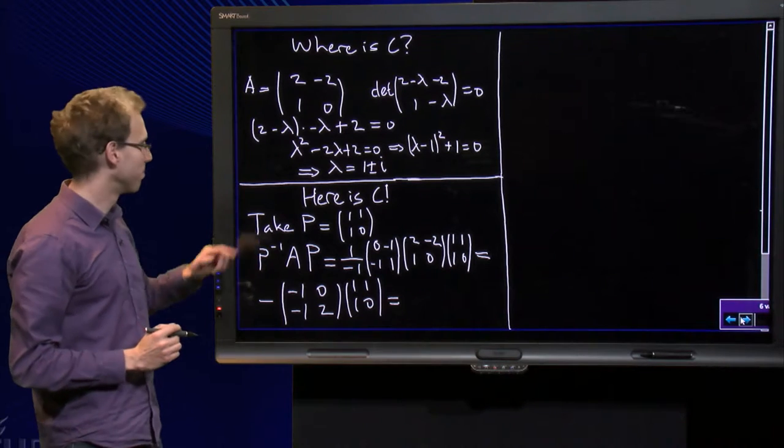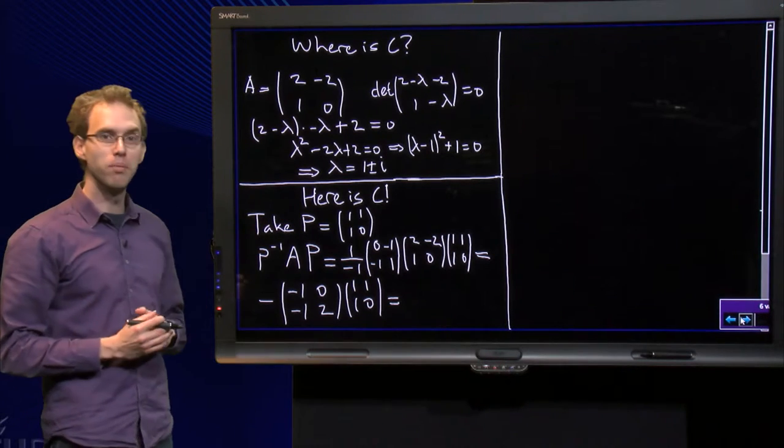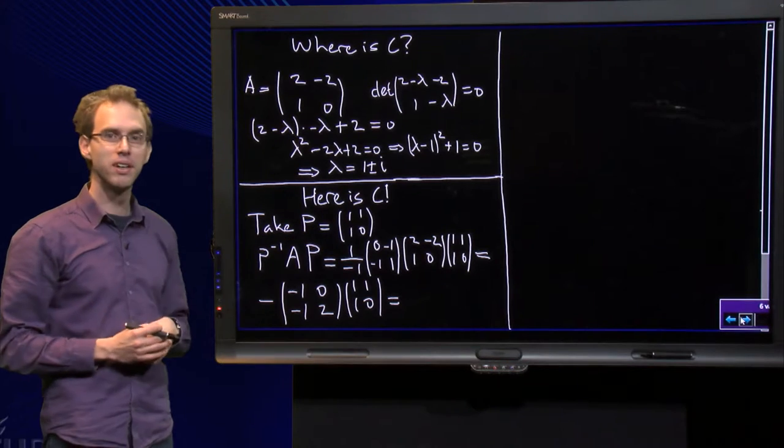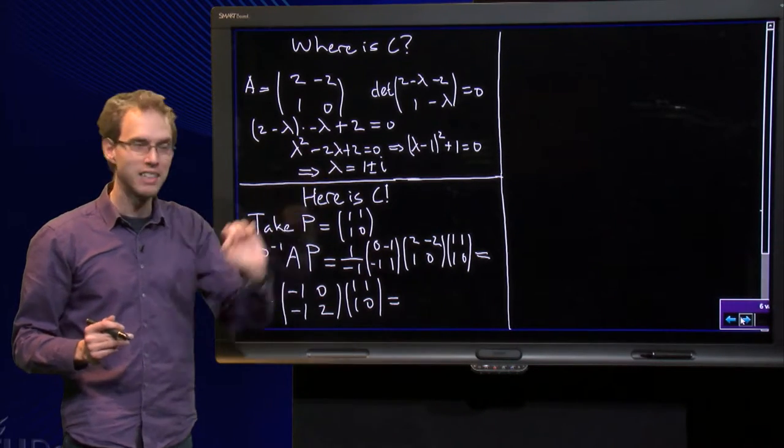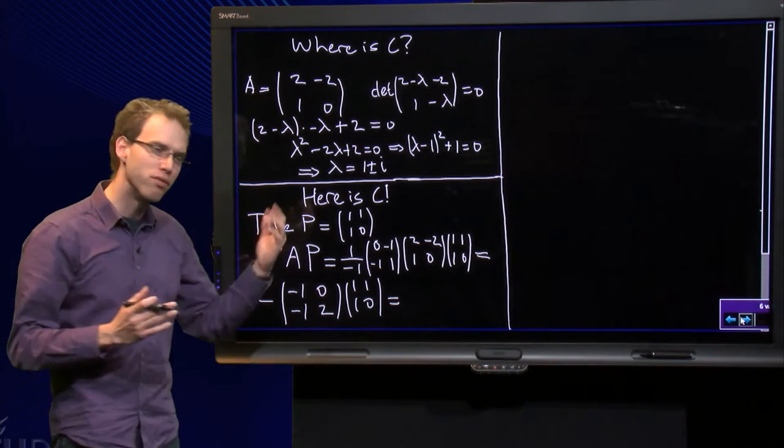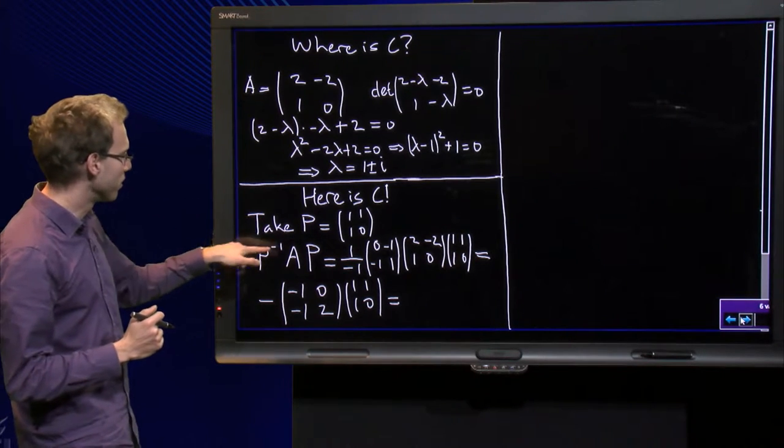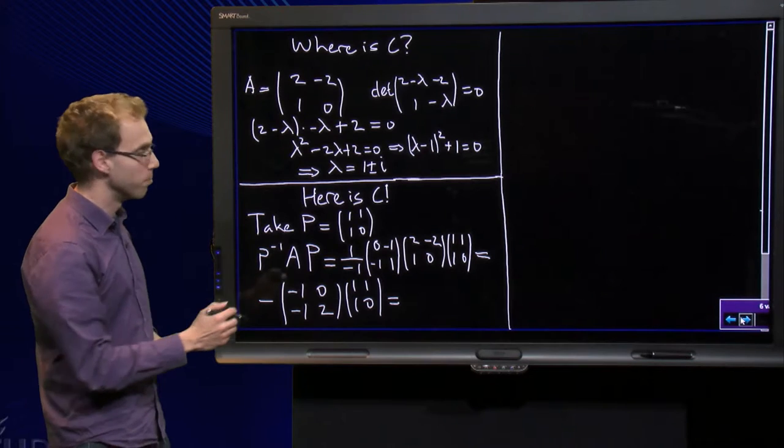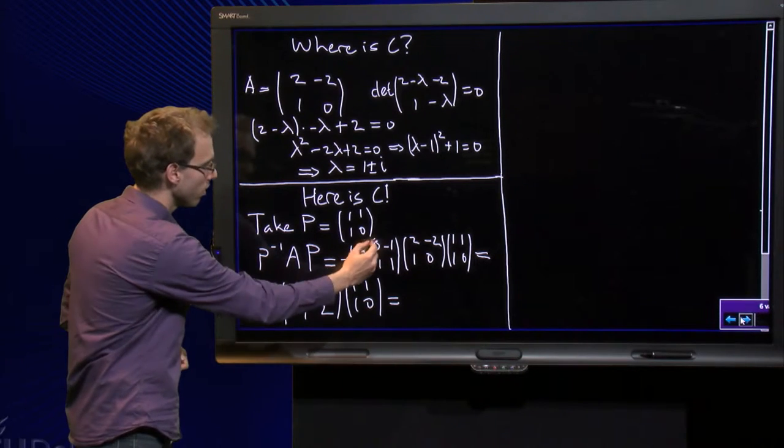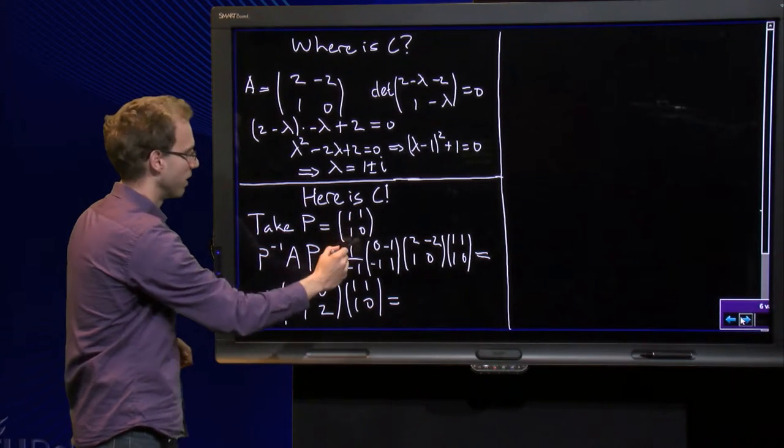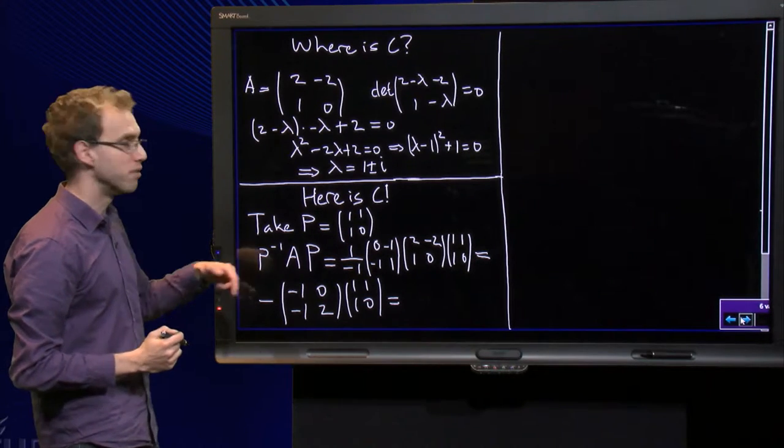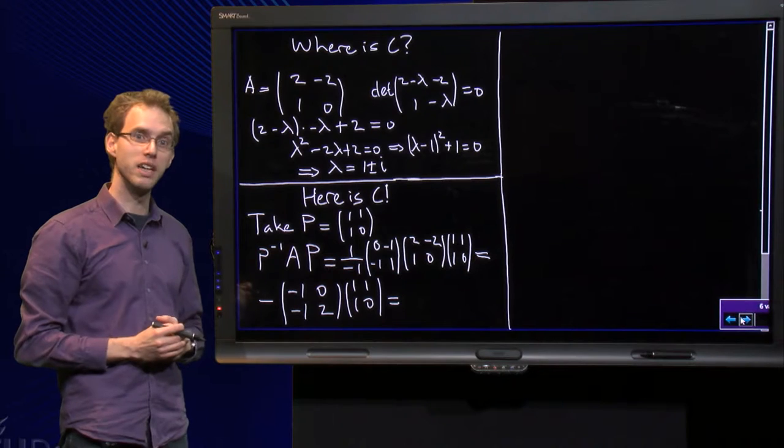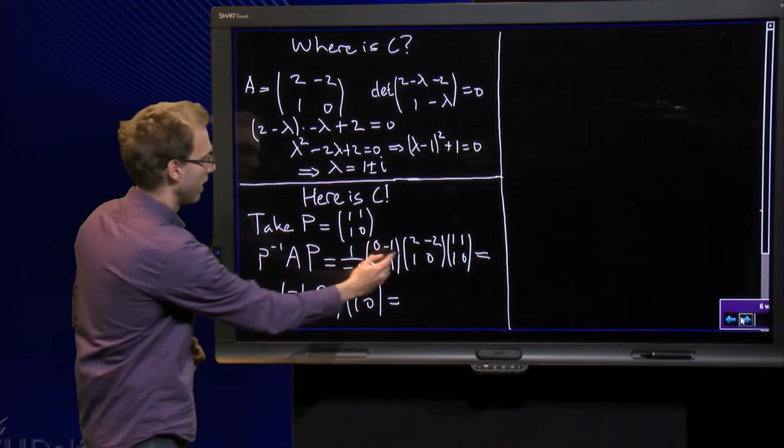Over here is C. Take matrix P, given over here, with entries 1, 1, 1, 0. You don't know yet why to take exactly this P, we will see that later. Let's take this P for a moment and compute P inverse A times P. So P inverse, over here - interchange the 1 and the 0, put minuses in front of the ones over there, and divide by the determinant which happens to be equal to minus 1. Then A times P.